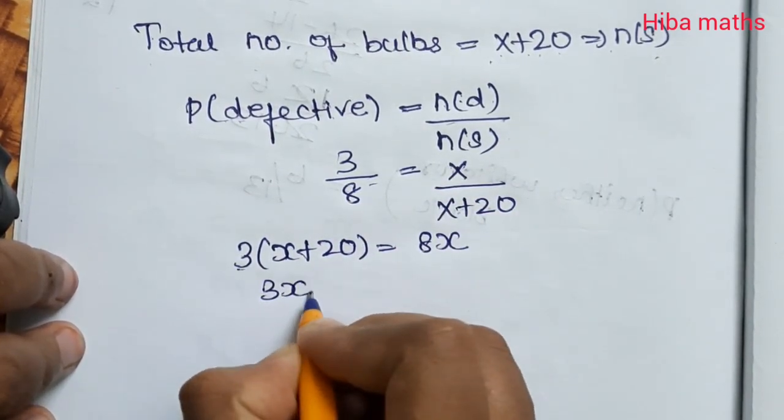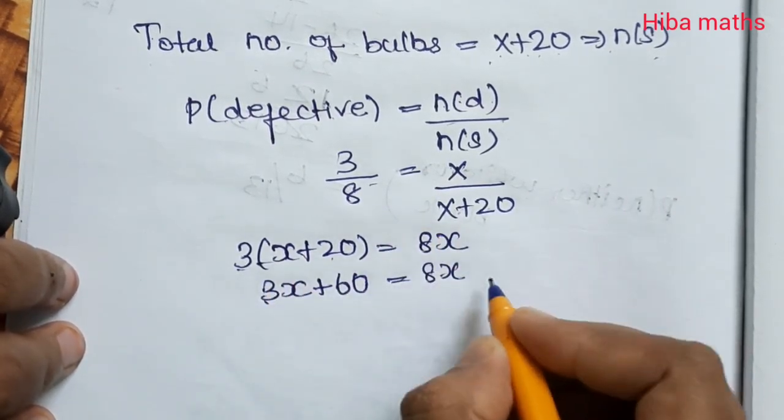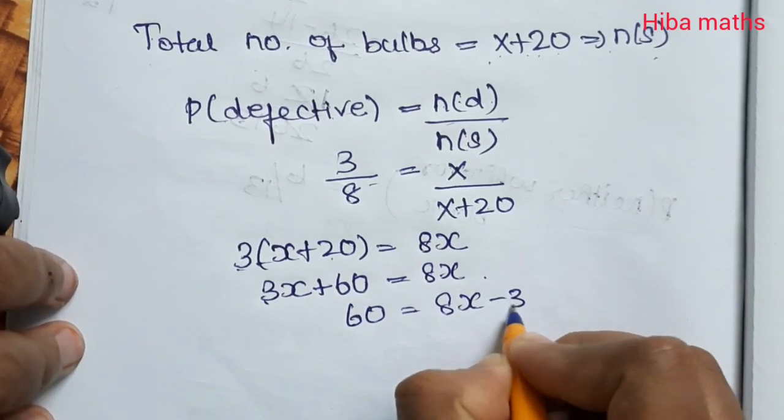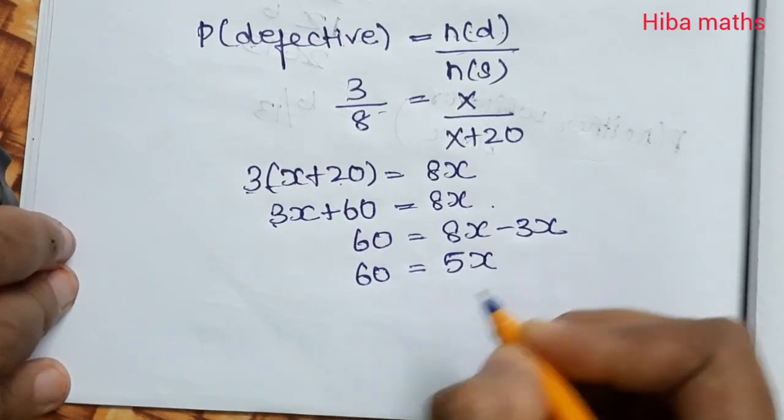3 times x is 3x, 3 times 20 is 60, so 3x + 60 = 8x. Moving 3x to the other side: 60 = 8x - 3x, 60 = 5x.